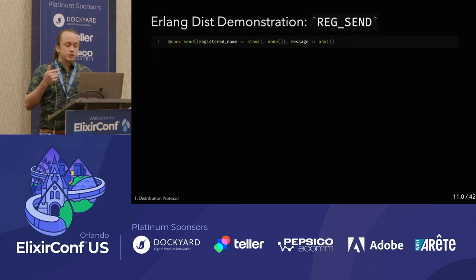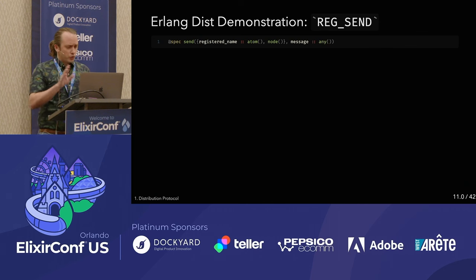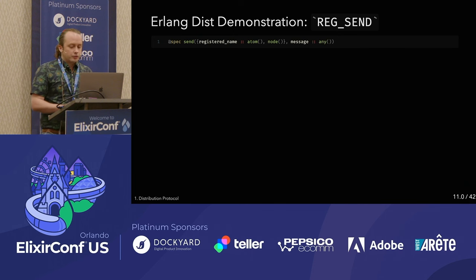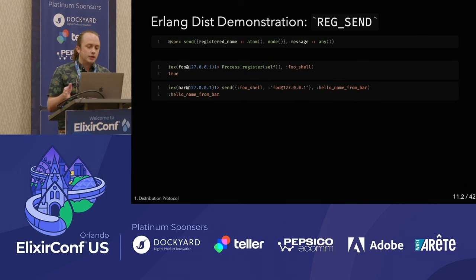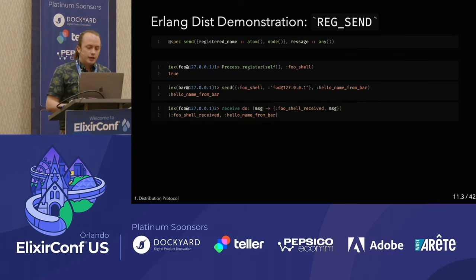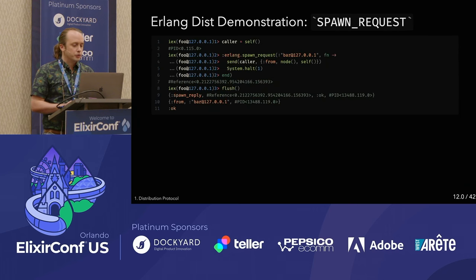You can also send messages to a registered process. If you don't know the PID of another node, you can send a tuple with the registered name on the other node and the node name itself. So I can register the shell process as foo_shell on the foo node, and then on bar I send to {foo_shell, foo@localhost} with whatever message I want, and that works too.